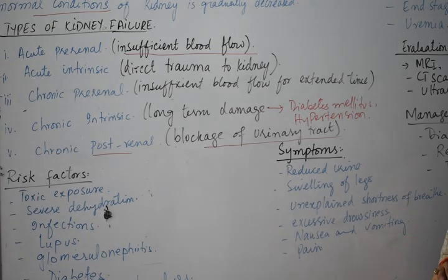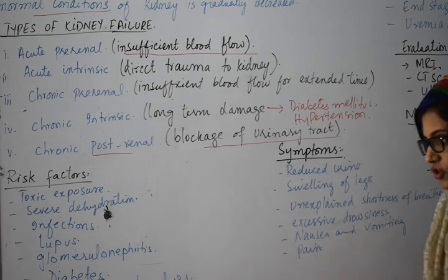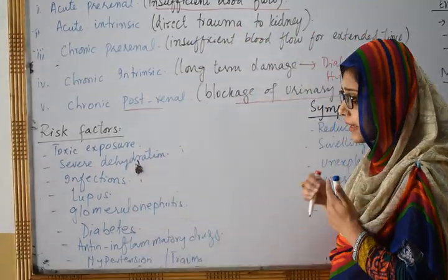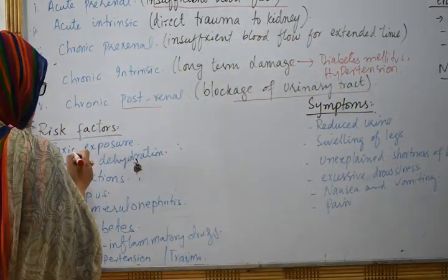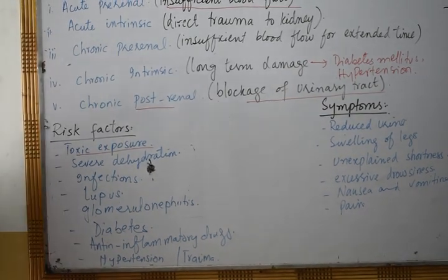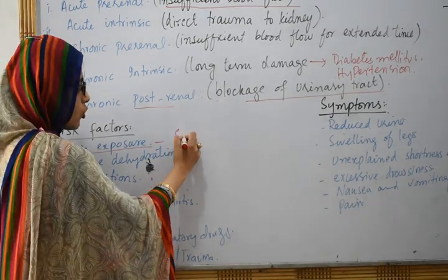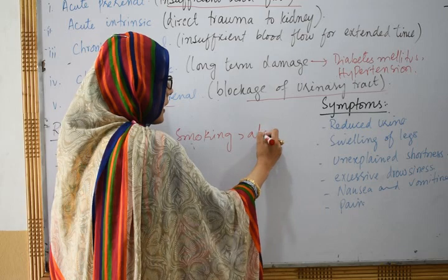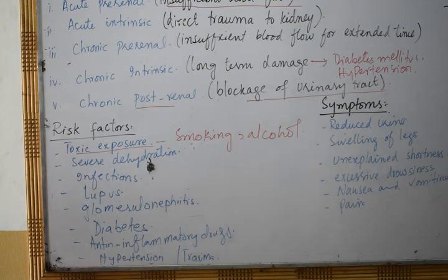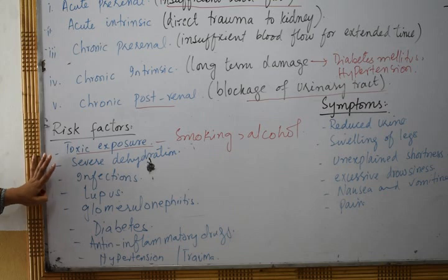These are the risk factors which increase the chances of occurrence of renal failure. First, toxic exposure — such as toxic or chemical elements — increases risk. Radioactive elements are also included. Prolonged smoking and alcohol intake are risk factors. Toxic exposure can cause kidney failure. Severe dehydration over a long time can also damage the kidney.